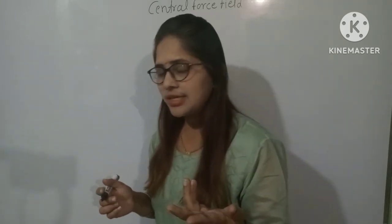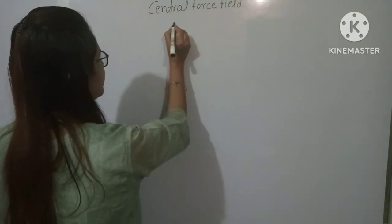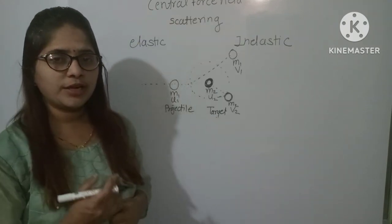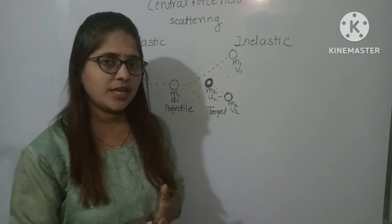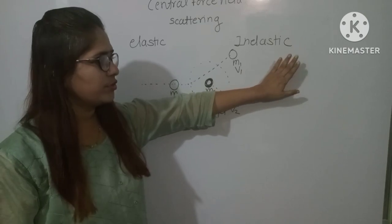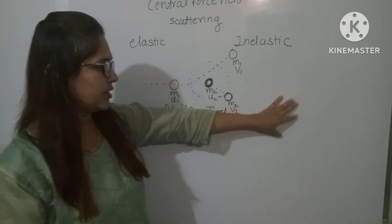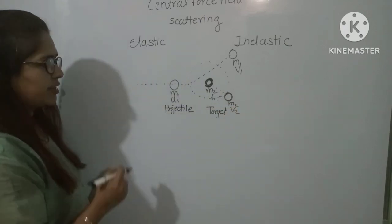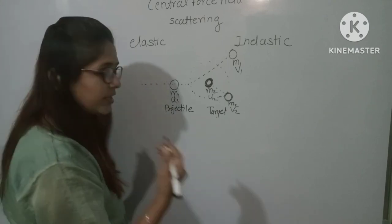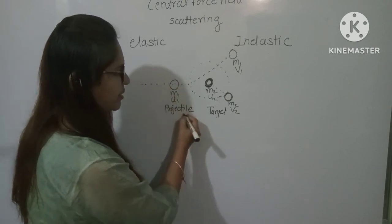There are two types of scattering: elastic scattering and inelastic scattering. In elastic scattering, both the law of conservation of linear momentum and the law of conservation of energy are satisfied. Whereas in inelastic scattering, the law of conservation of linear momentum is satisfied, but the law of conservation of energy is not satisfied.